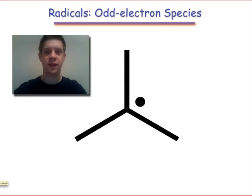Organic species that contain unpaired electrons are known as free radicals. As you can see here, we draw the unpaired electron as a single dot next to the atom on which it resides.